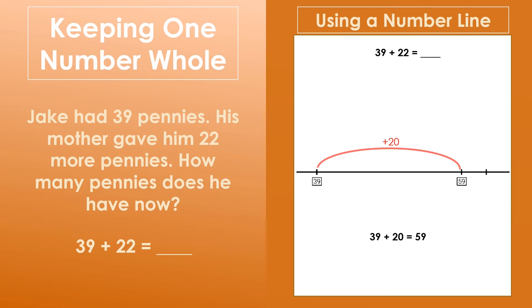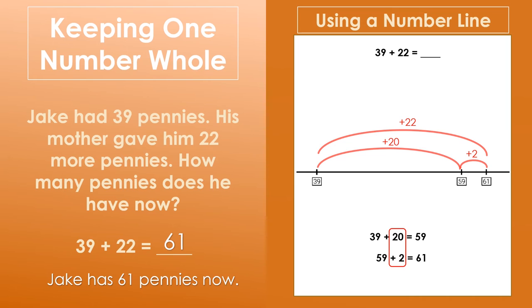Then, we will add two more. 59 plus 2 equals 61. So, all together, we added on 22 to 39. Jake has 61 pennies now.